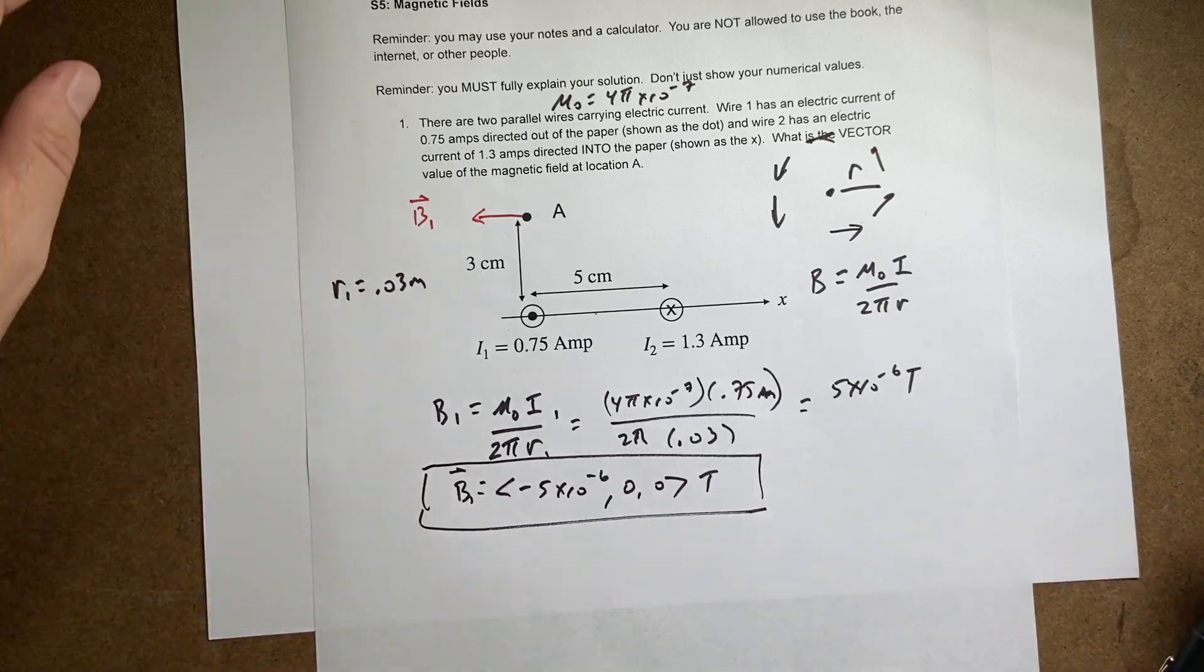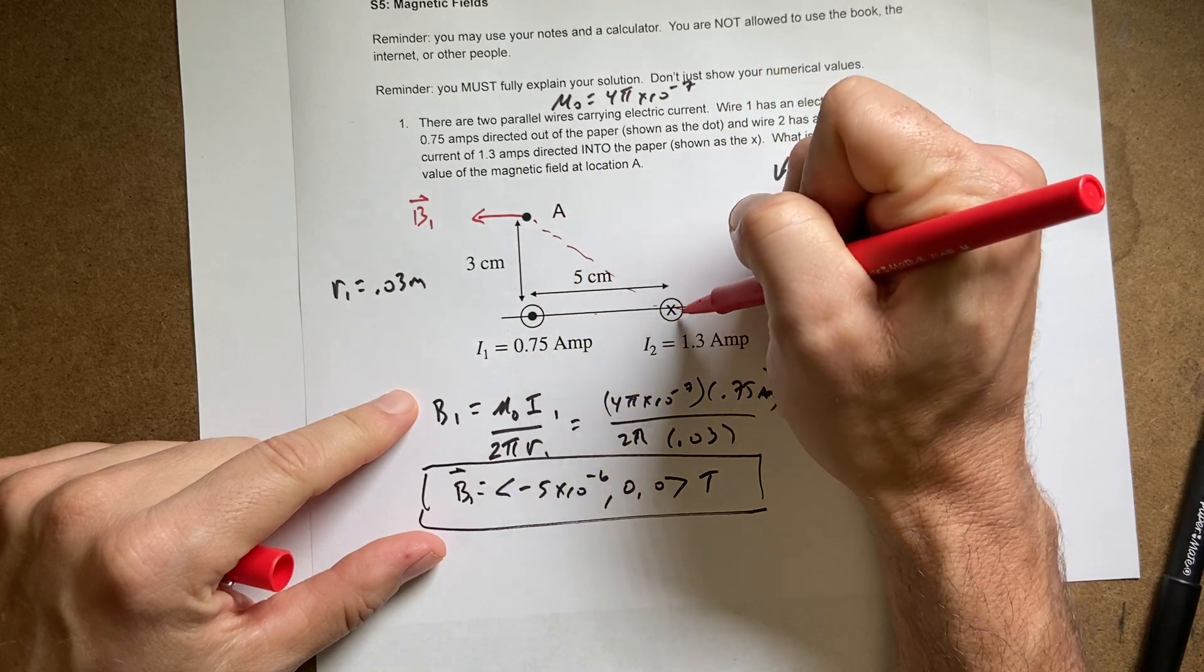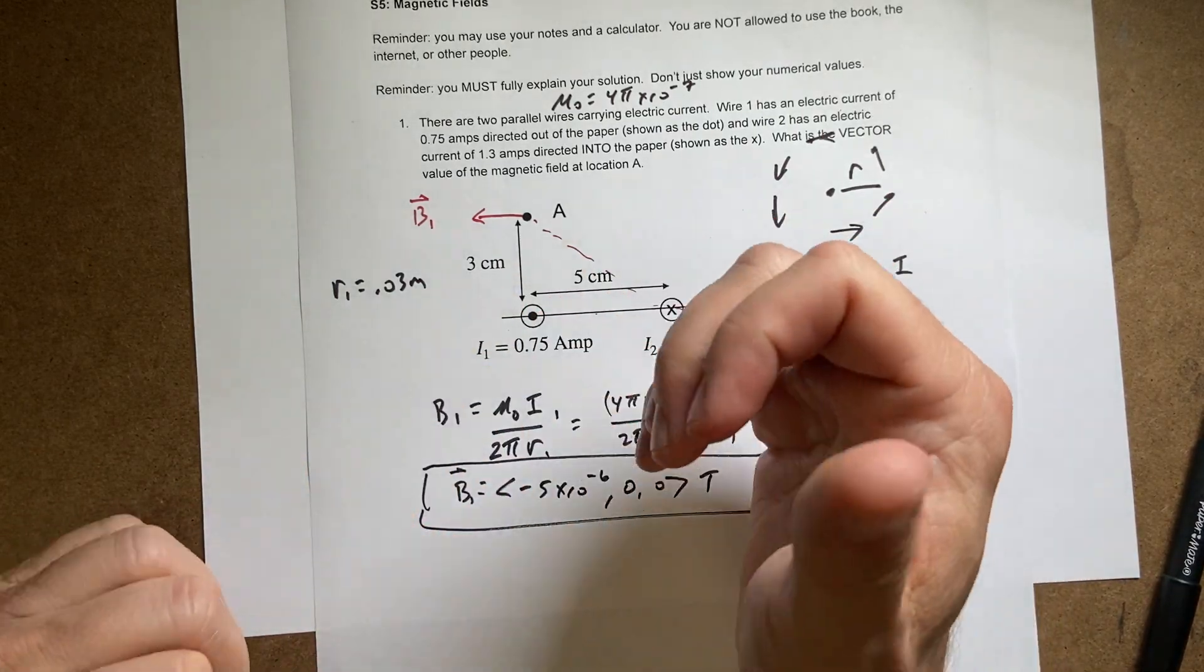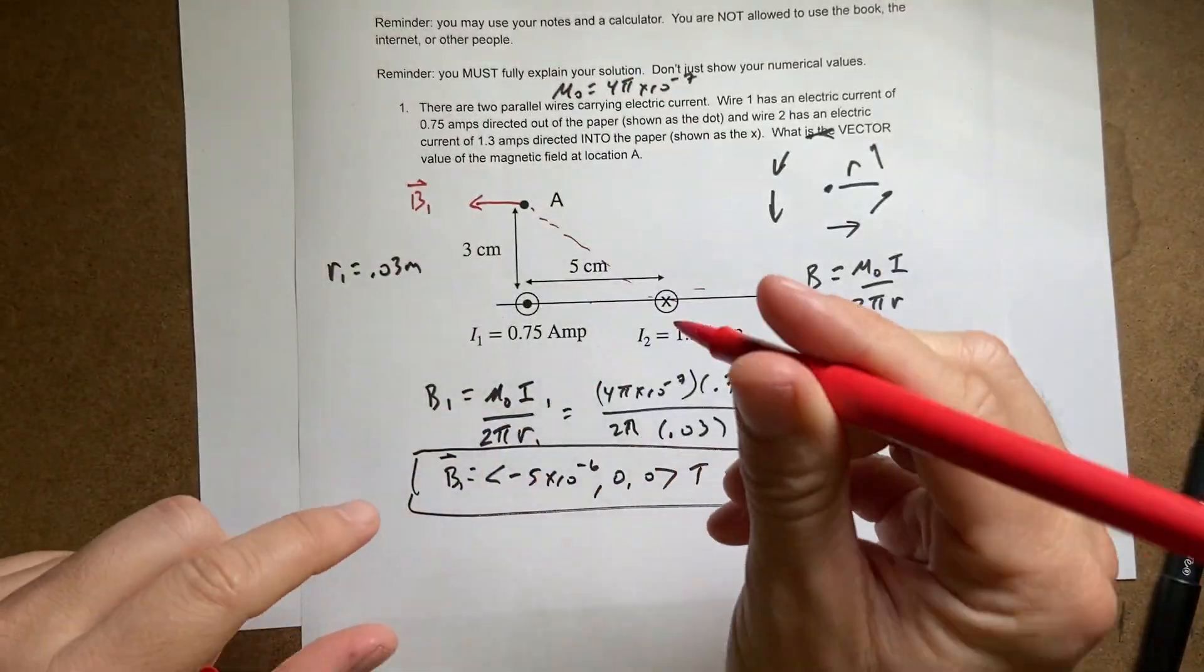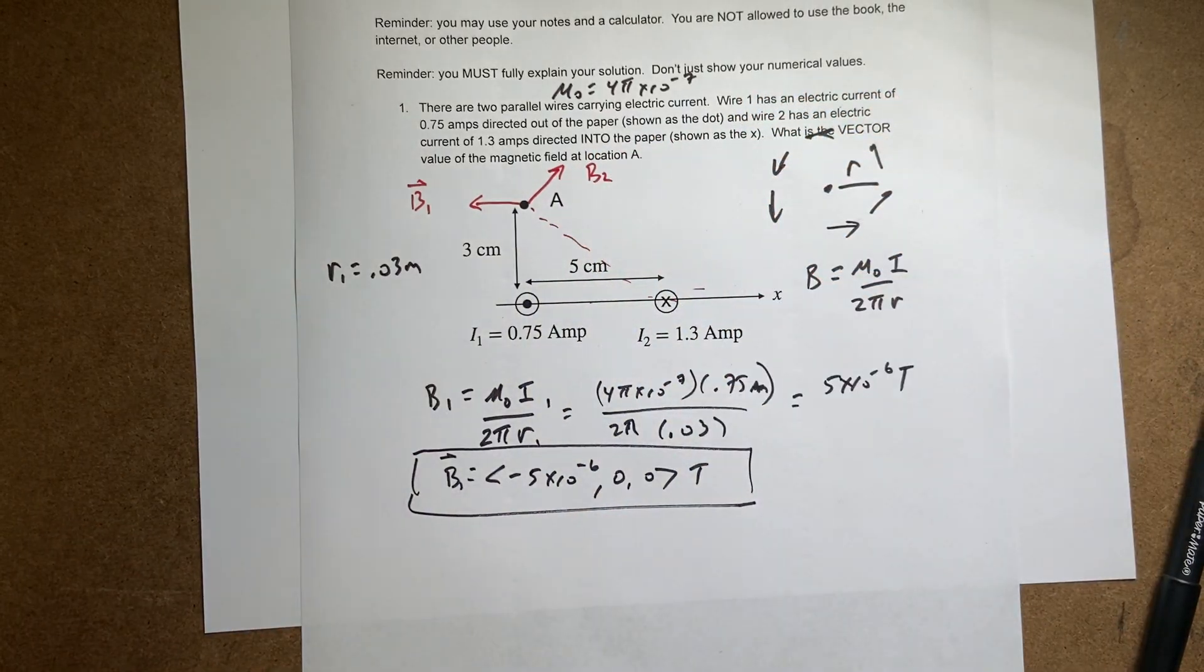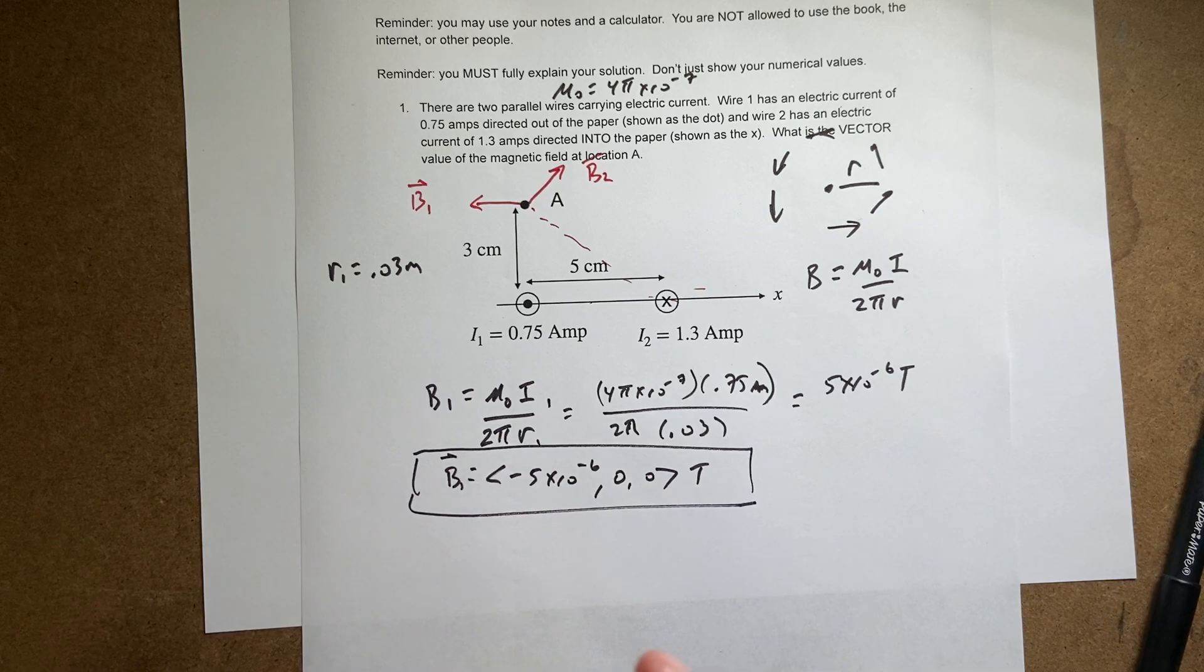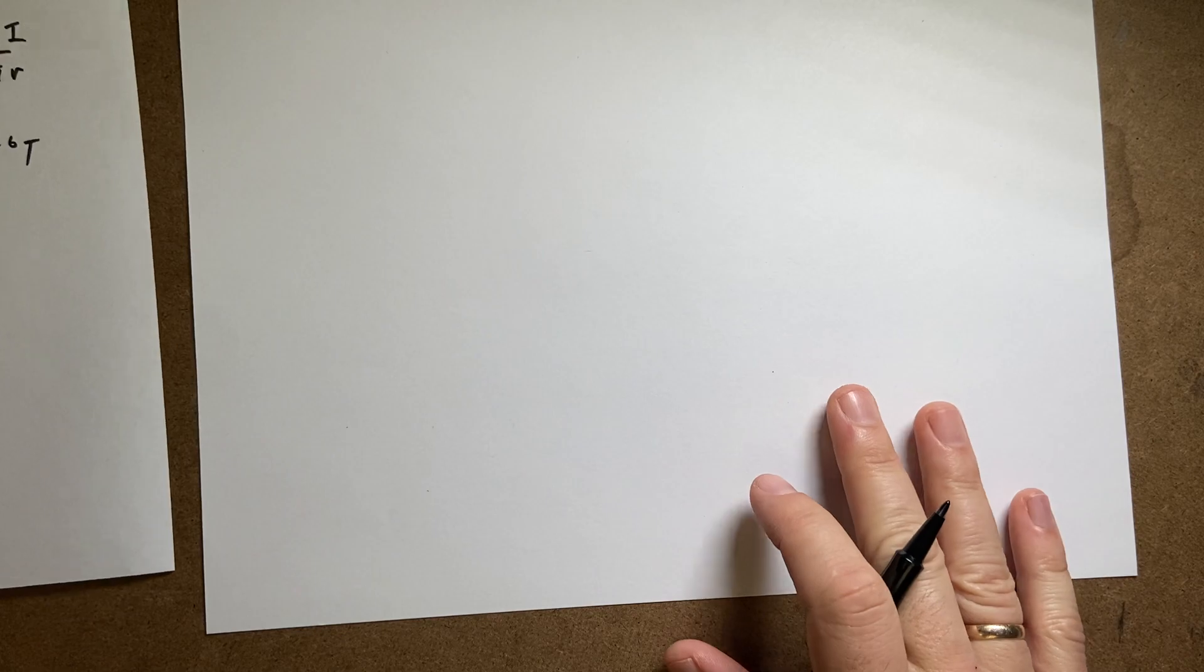Now what about B₂? This one's a little bit more tricky because first I need to find this distance. I know this is 5 and that's 3, so I can solve for that. But what about the angle? This current is going into the paper, so the magnetic field is going to be going like this. I'll call that B₂. I need to find the magnitude and the vector. First, let's find r₂.